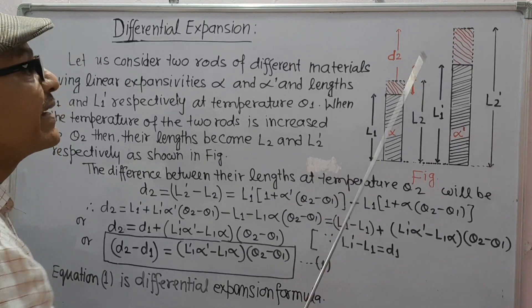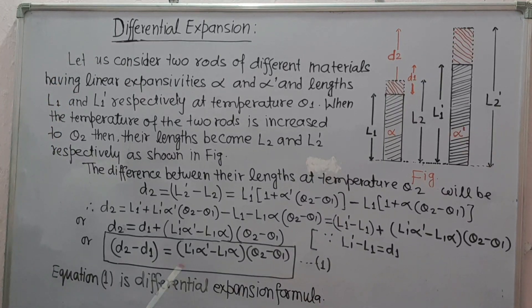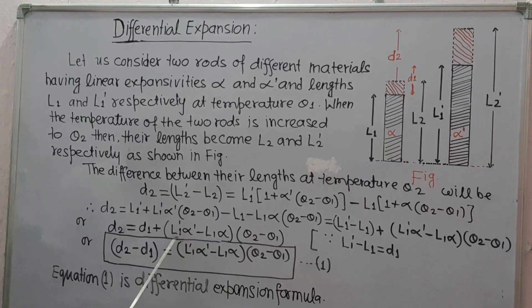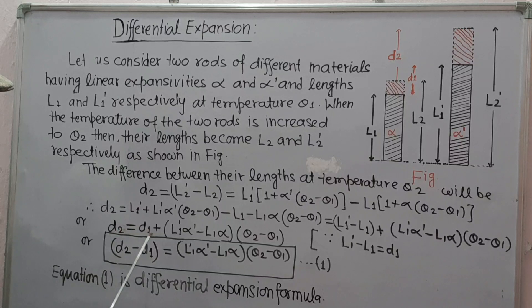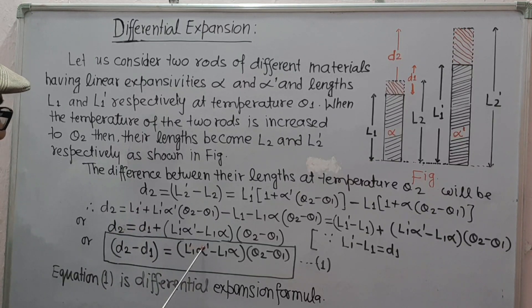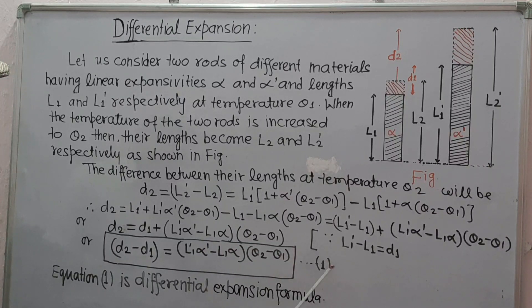D1 is the difference of their initial lengths. So we get: D2 minus D1 is equal to (L1 dash alpha dash minus L1 alpha) into (theta 2 minus theta 1).